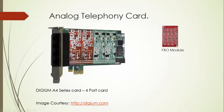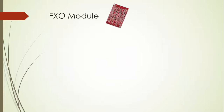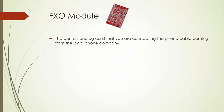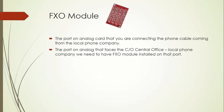The red one is known as the FXO module, and the green one is known as the FXS module. The FXO module is the port on the analog card where you connect the phone cable coming from the local phone company — the one facing the CO, or central office. We need to have the FXO module installed on that port.